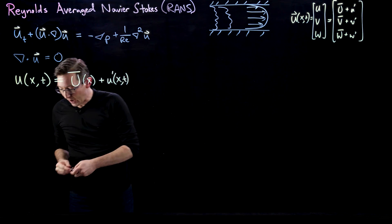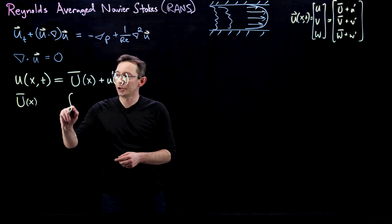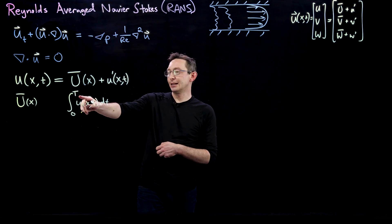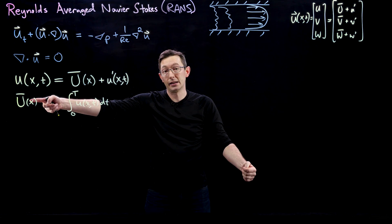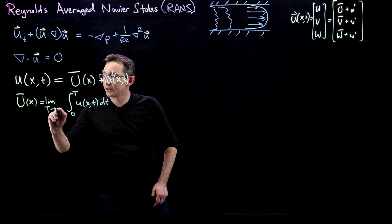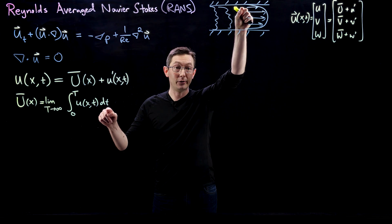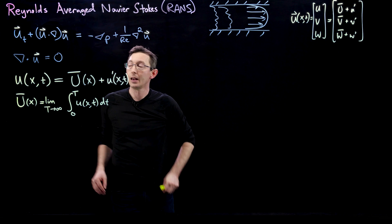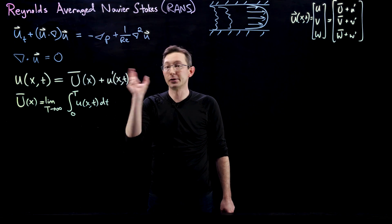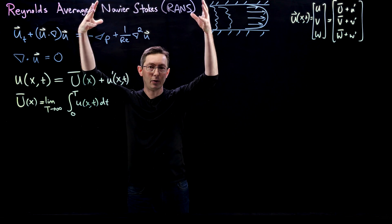The way we compute ū is simple: ū(x) = lim_{T→∞} (1/T) ∫₀ᵀ u(x,t) dt. We average for long enough that this converges — that's called stationarity. At every point in space we average out time, then move to the next point, building up ū. And u prime is literally defined as everything else: u prime = u − ū, capturing all the fluctuating components.